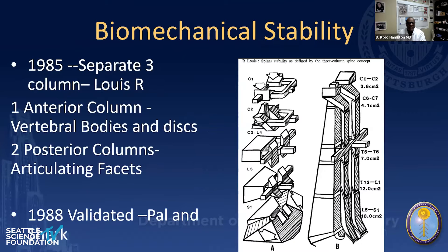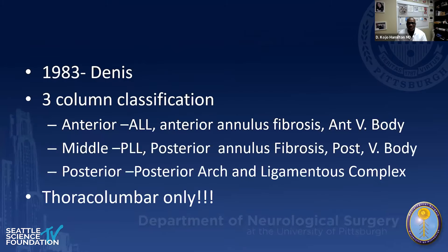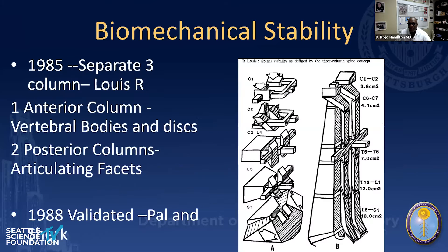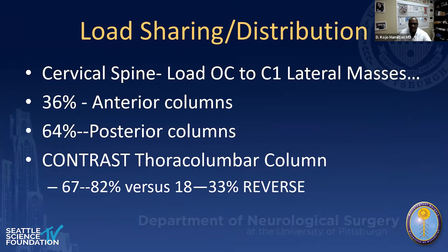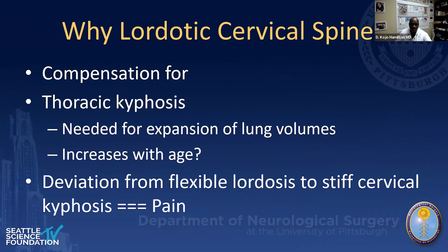In biomechanical stability, we initially thought of the cervical spine as a two-column construct — the anterior column and two articulating facets in the posterior column — compared to the thoracolumbar three-column model. From a biomechanical perspective it is really a two-column construct, responsible for load sharing and distribution: 36% of load sharing is via the anterior column versus 64% in the posterior columns.